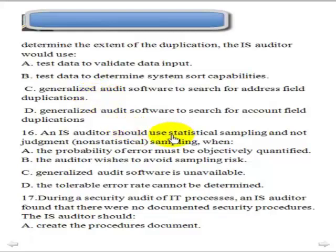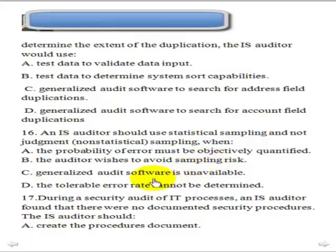Question 16: An IS auditor should use statistical sampling and not judgmental sampling when: the probability of error must be objectively quantified; to avoid sampling risk — though you cannot avoid sampling risk if you do sampling, the only way is to use 100% of the population; when generalized audit software is unavailable; or when the tolerable error rate cannot be determined. The answer is A: use statistical sampling when you must have objective quantification.